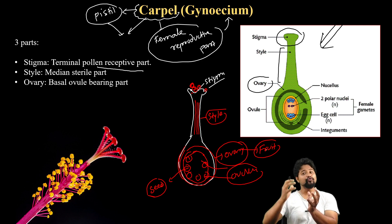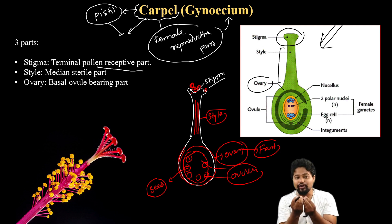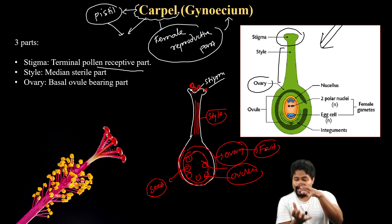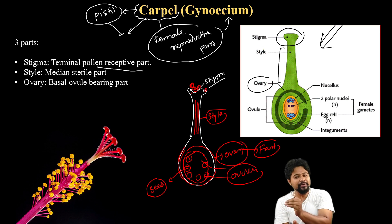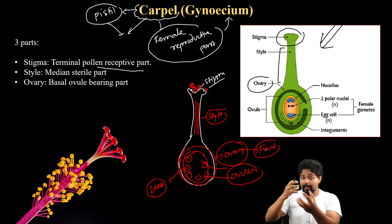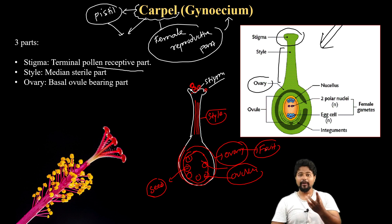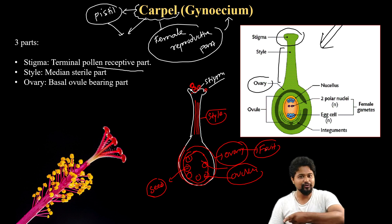The ovary changes into fruit. The ovary has ovules inside it. The ovules contain the female egg. We will discuss the female reproductive part and female egg in detail in the next class.